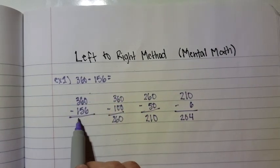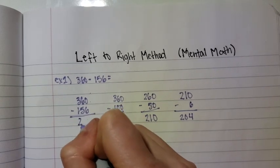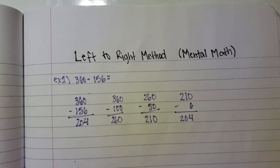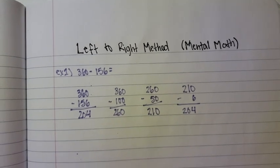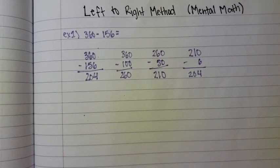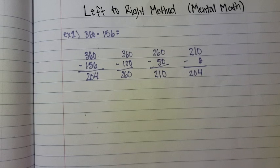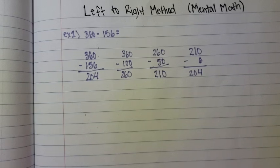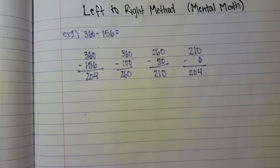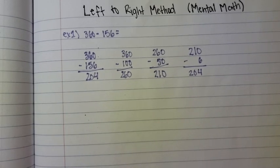So, 360 minus 156 equals 204. We're going to do a couple more examples for you guys to catch along, or get it and understand it. The left to right method is very much kind of like breaking it apart and doing it. It just has a lot more steps than the traditional method, but it's not an issue if you need to break it down at all.